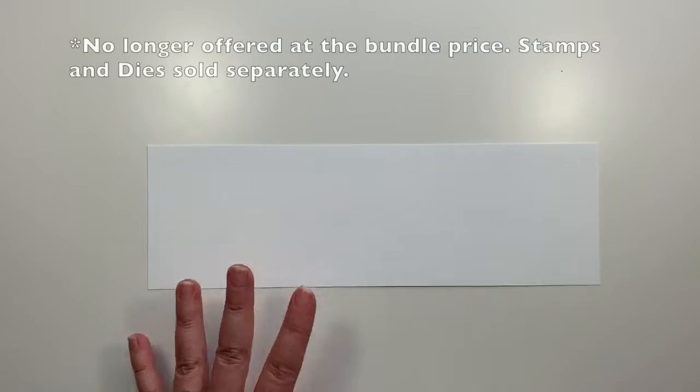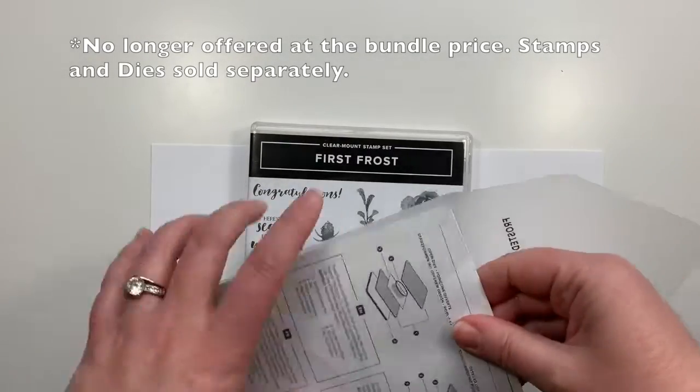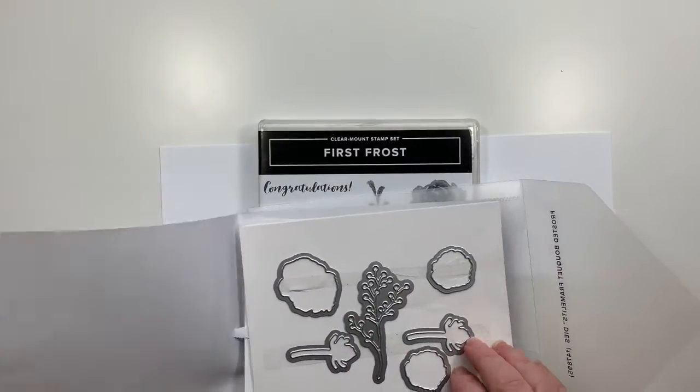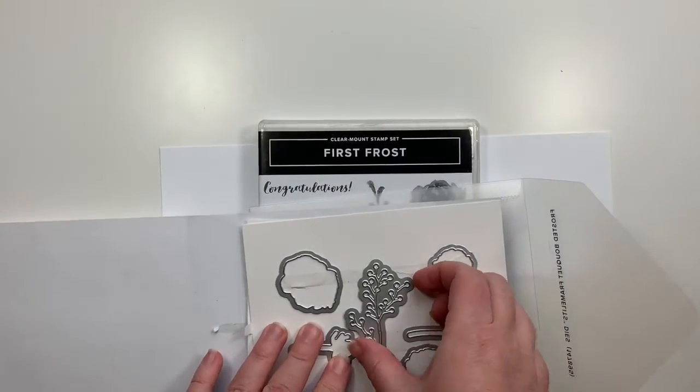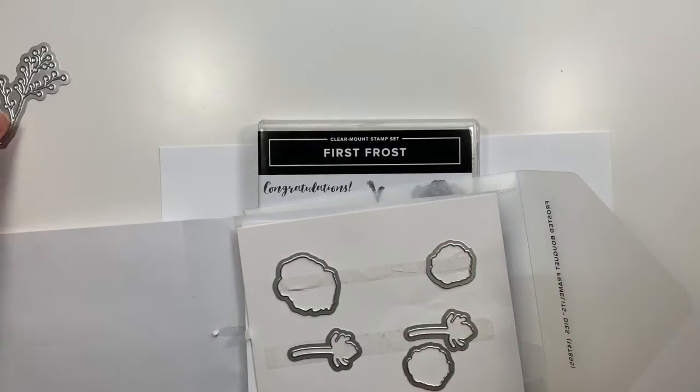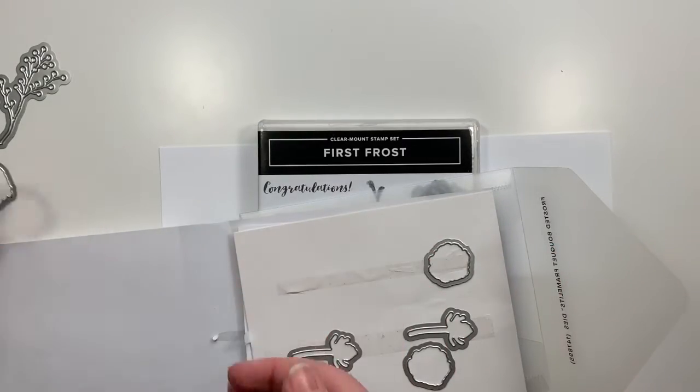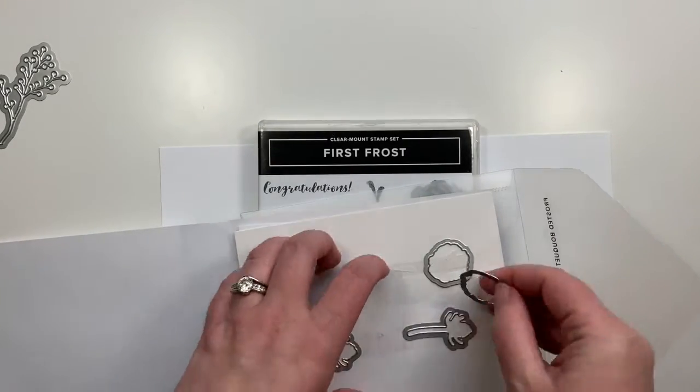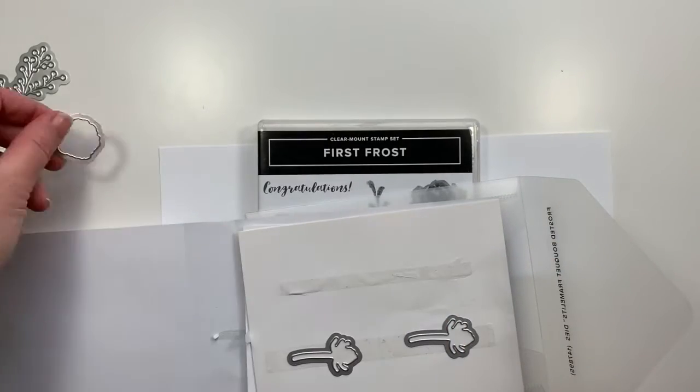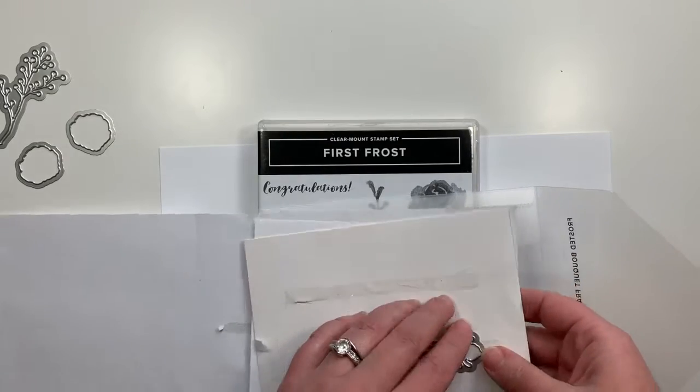We're going to use the First Frost bundle and this includes the stamp set and the Framelits dies. From the Framelits dies we're going to use several pieces. We're going to use the branch-like piece with the little berries on it, the large flower as well as both of the small flowers, and I love that Stampin' Up includes multiples of the smaller dies so that you can run them through the Big Shot in one pass.